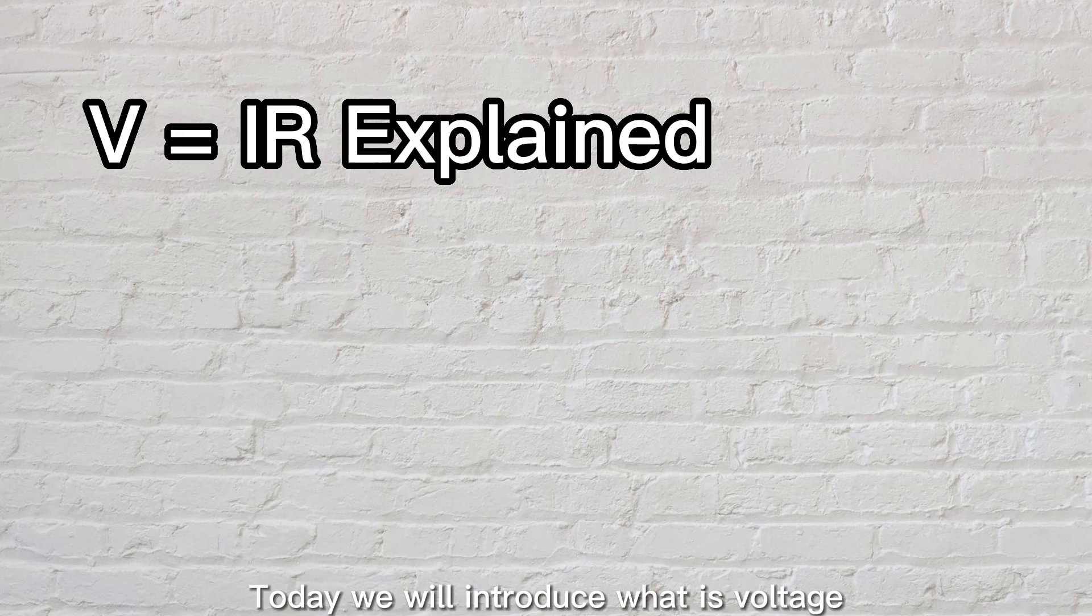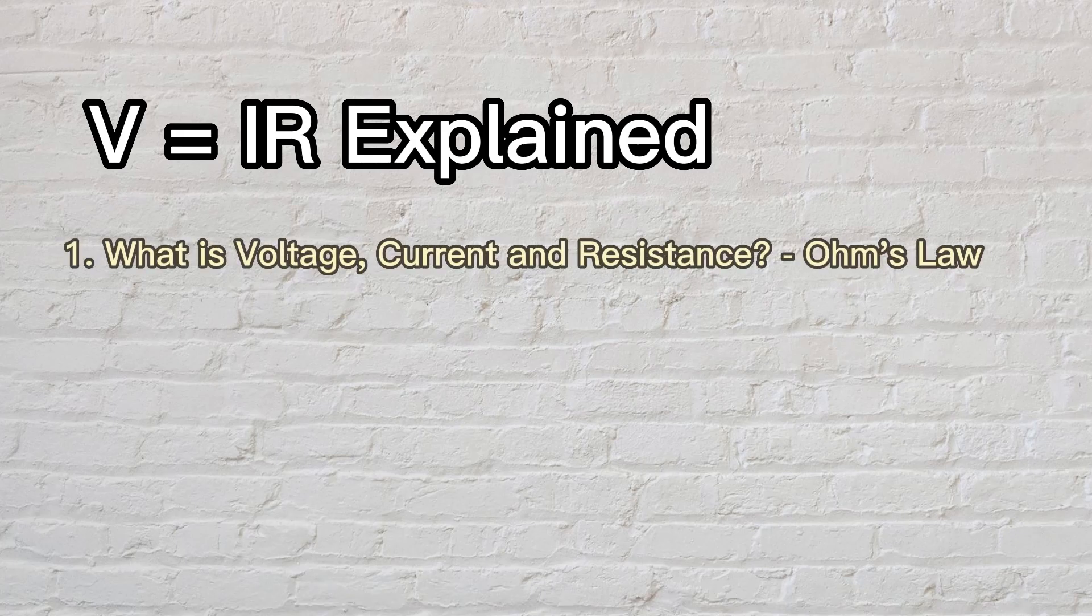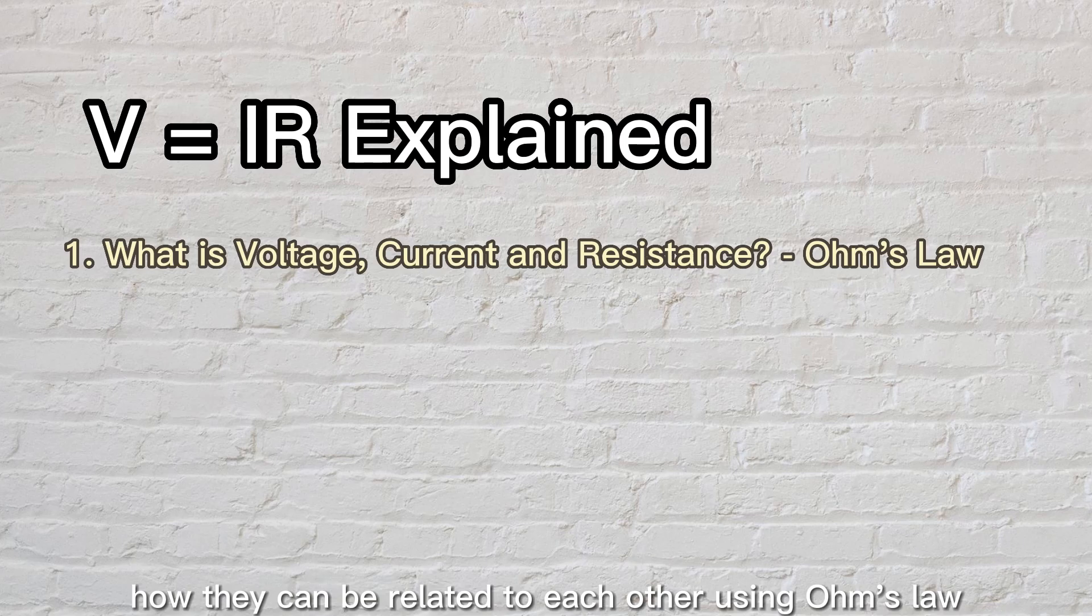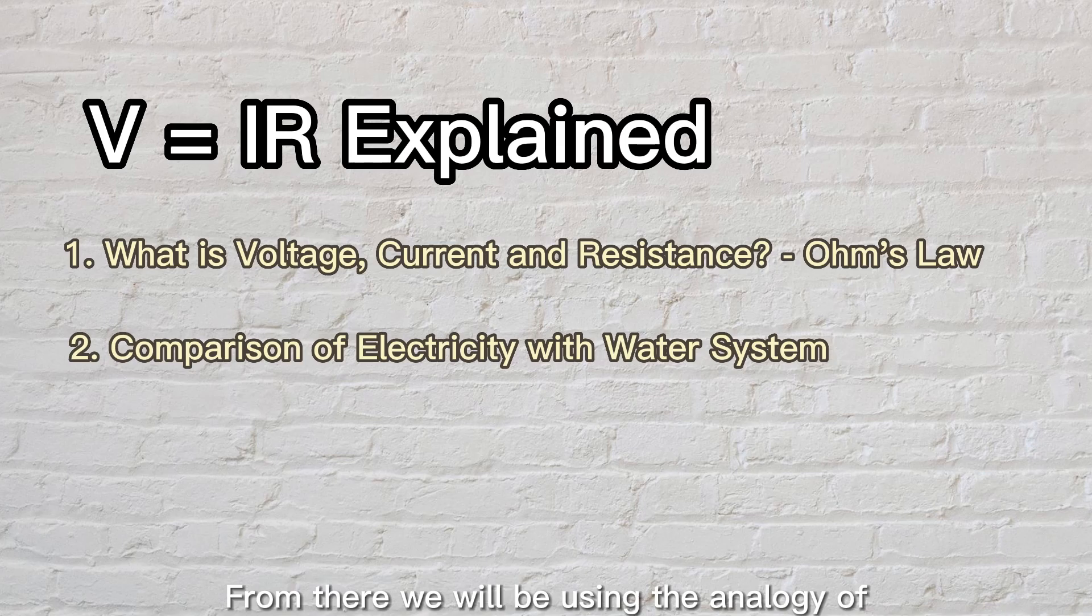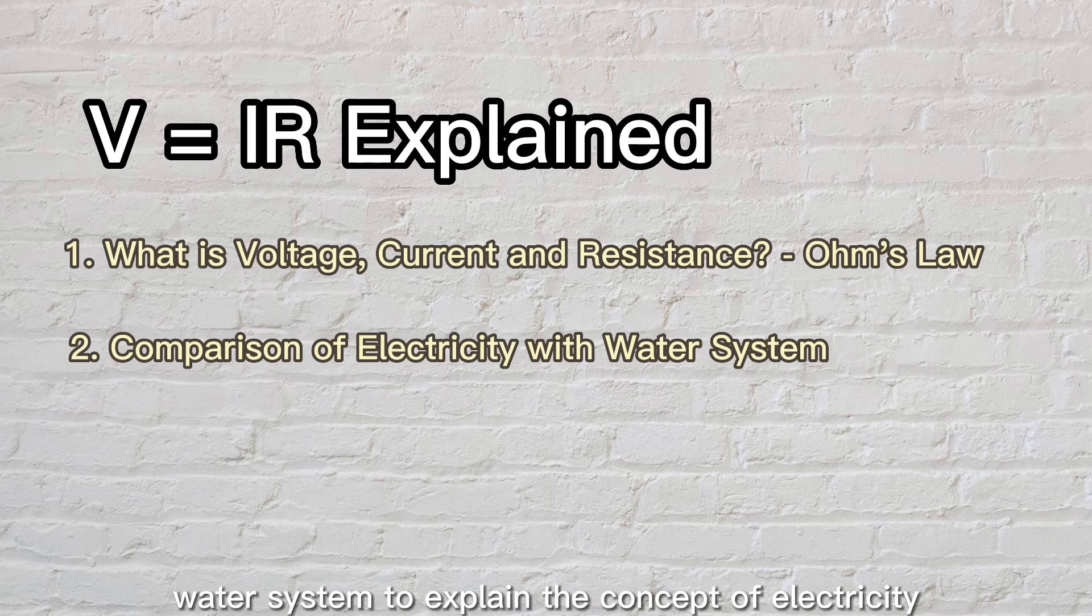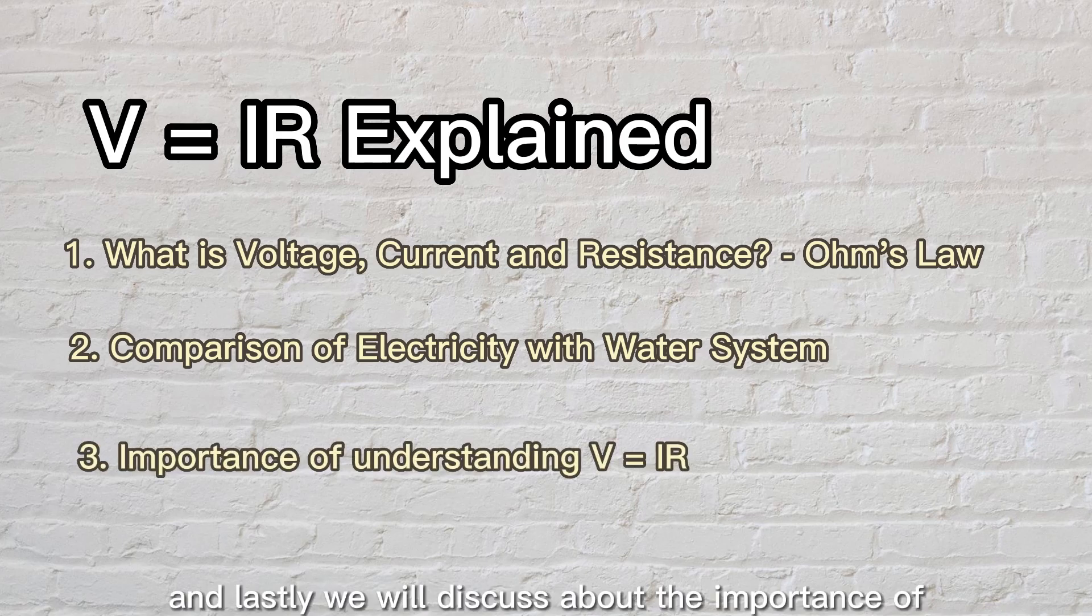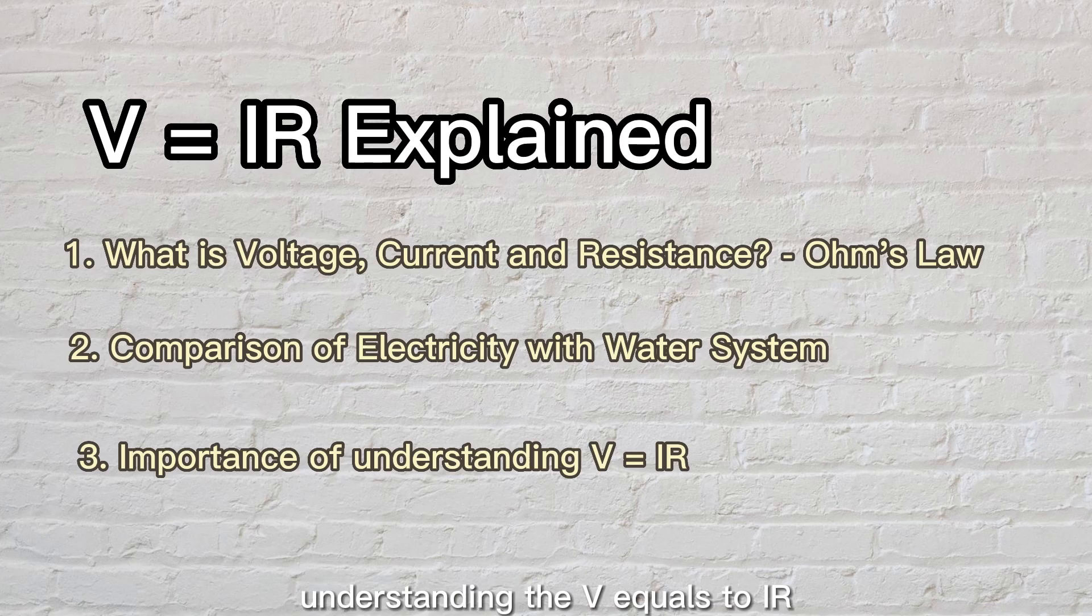Today, we will introduce what is voltage, current and resistance in a simpler way and how they can be related to each other using Ohm's law. From there, we will be using the analogy of a water system to explain the concept of electricity. And lastly, we will discuss the importance of understanding V equals IR. Without further delay, let us start our discussion today.